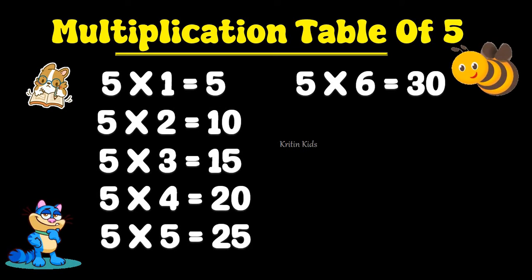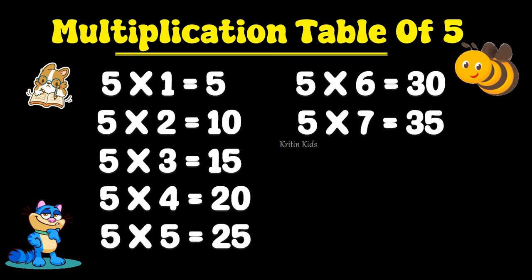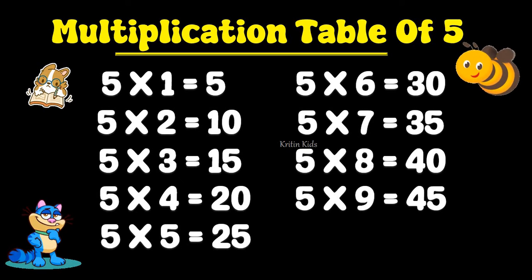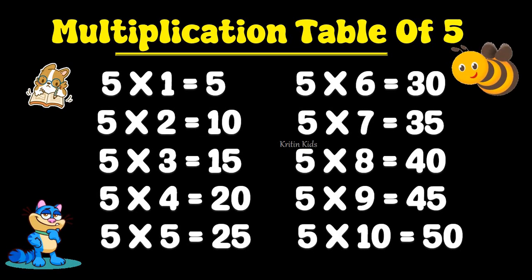5 6s are 30, 5 7s are 35, 5 8s are 40, 5 9s are 45, 5 10s are 50.